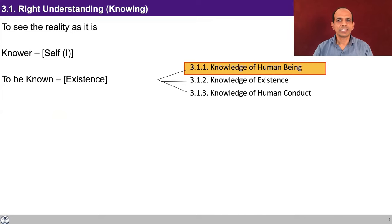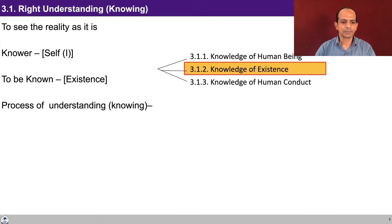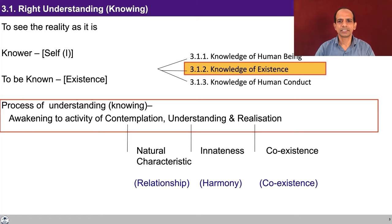Right understanding or knowing is basically to see the reality as it is. The knower is the self and the known is the whole existence. We already discussed about knowledge of the human being; now we are going to discuss about knowledge of existence. The process of understanding remains the same: awakening to the activity of contemplation, understanding, and realization. The content of contemplation is the natural characteristic in every order in nature. The content of understanding is the innateness of every order in nature. And the content of realization is the coexistence — that is the submergence of nature in space.